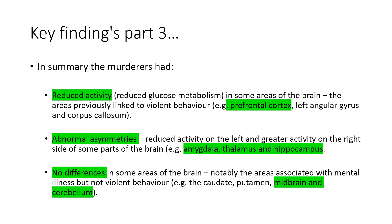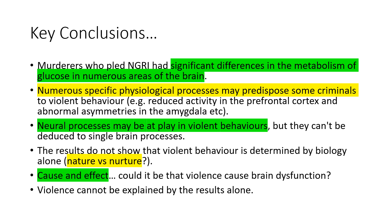There were no differences in areas of the brain associated with mental illness but not violent behaviour, which was consistent with the second hypothesis. The key conclusions were that murderers who pled NGRI had significant differences in glucose metabolism in numerous areas including the prefrontal cortex and amygdala. There were numerous physiological processes that may predispose some criminals to violent behaviour, but neural processes responsible for violence can't always be reduced to a single brain process, making it hard to determine which process is responsible.